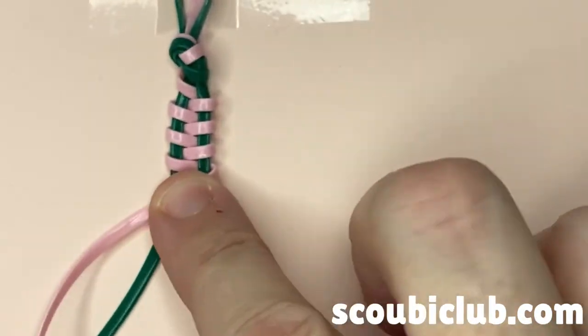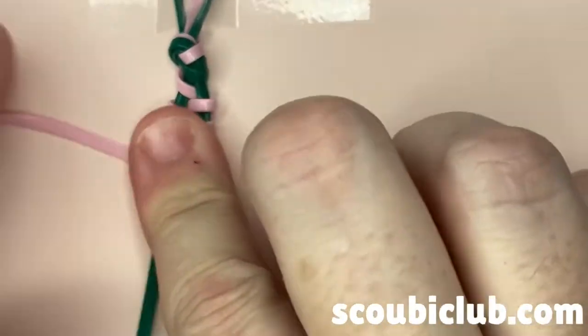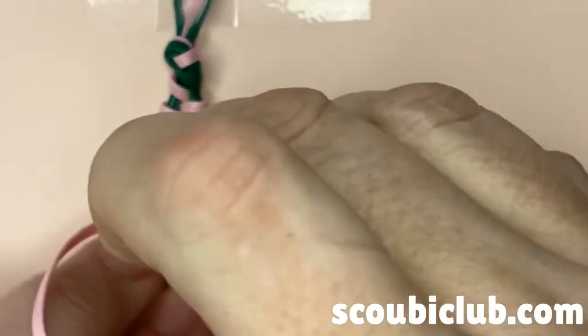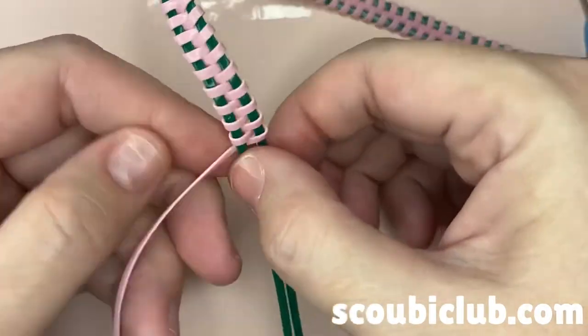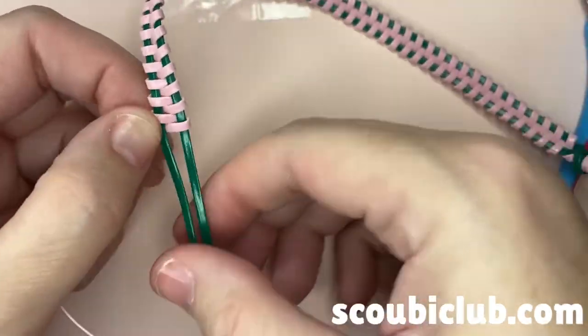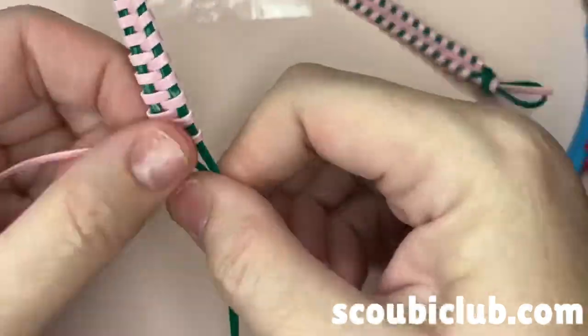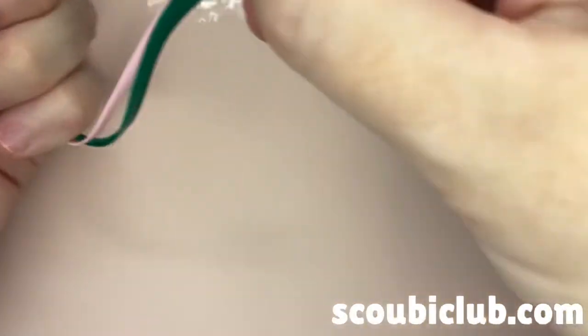Continue the over-under pattern until your bracelet is the desired length. For kids, this will be about five and a half to six and a half inches. For adults, about six and a half to seven and a half inches long.